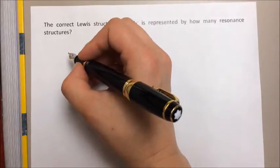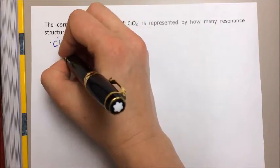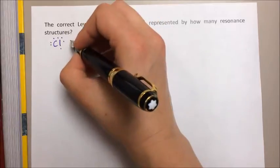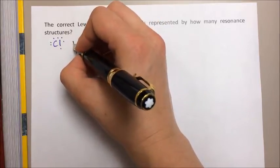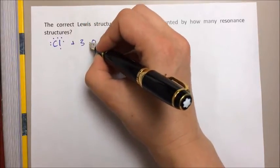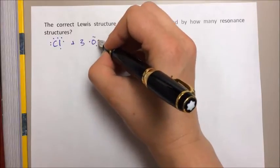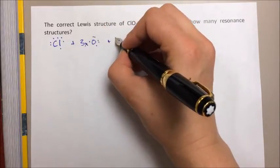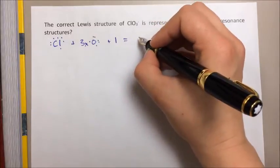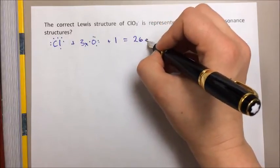Let's calculate our valence pool. That's going to be chlorine with one, two, three, four, five, six, seven valence electrons, plus three oxygens with one, two, three, four, five, six valence electrons. And then we have to add one more to account for the charge, giving us a total valence pool of 26 electrons.